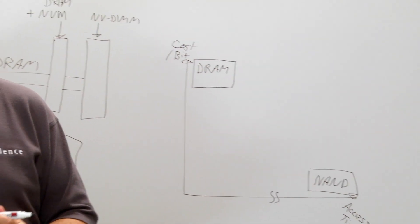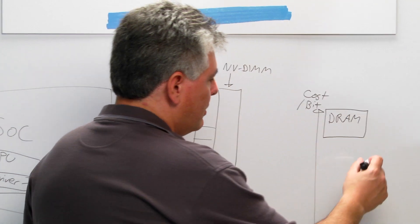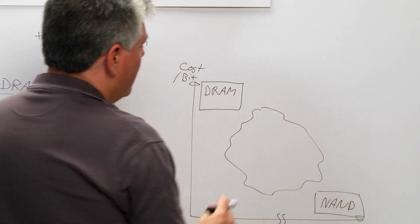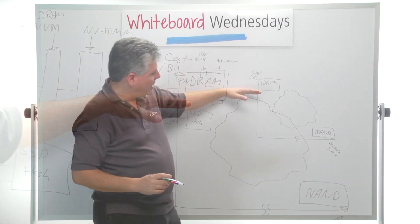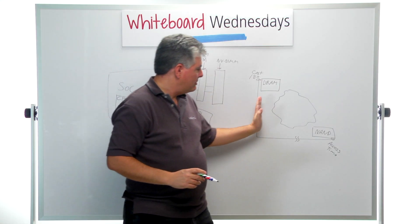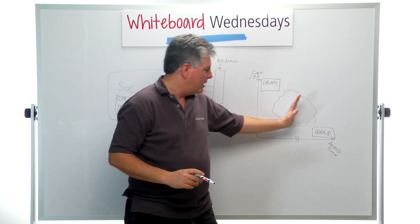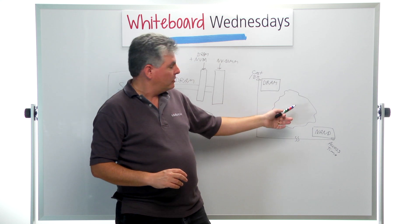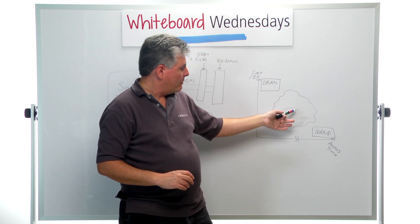And what we're starting to see in the industry is there's some new types of memory sort of coming into this space here. Their cost may be between DRAM and NAND flash, and their access time similarly may exist somewhere between DRAM and NAND. So there's a lot of opportunity to introduce this type of memory.